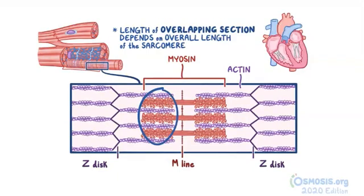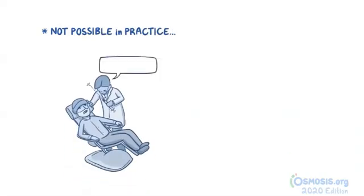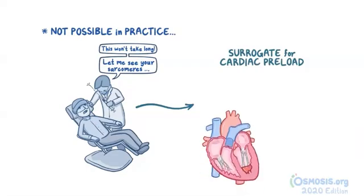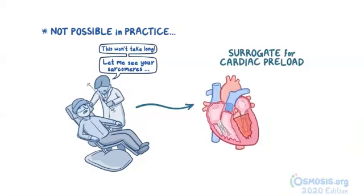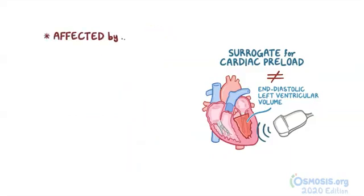No matter how we define cardiac preload, these measurements are not practical in vivo. Therefore, in clinical practice, a surrogate is used: the volume of blood within the left ventricle at the end of diastole, which stretches the muscle wall and each sarcomere within it. The end-diastolic left ventricular volume is not identical to cardiac preload, but it can be measured with an echocardiogram, making it the preferred parameter in practice. The left ventricular end-diastolic volume, and therefore preload, is affected by five factors.